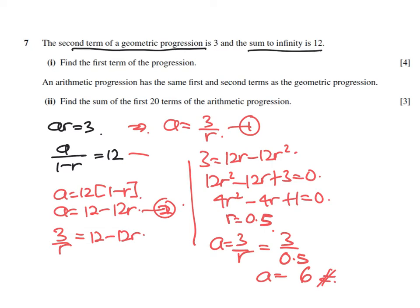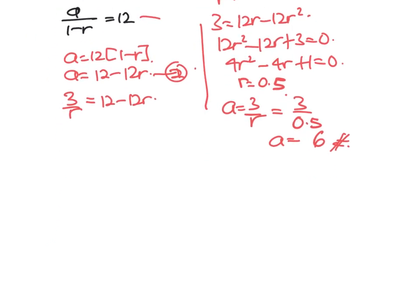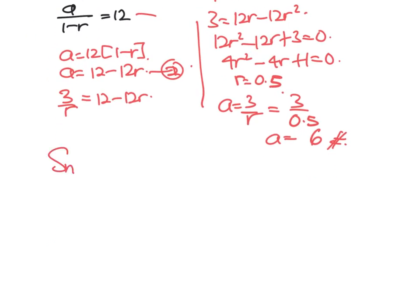Next, an arithmetic progression has the same first and second term as the geometric progression. Number 2: Find the sum of the first 20 terms of the arithmetic progression. The formula is Sn equals n over 2 times 2a plus n minus 1 times d.